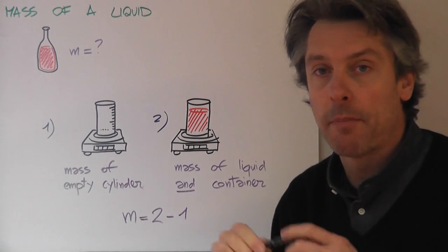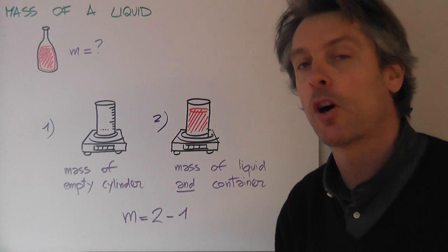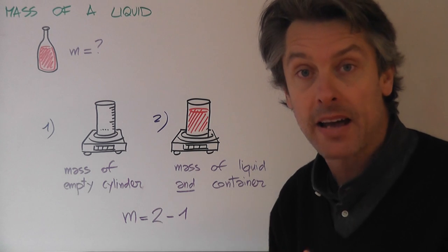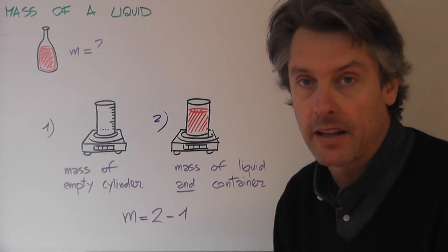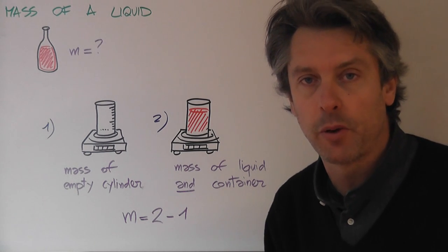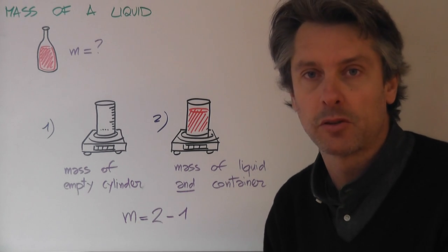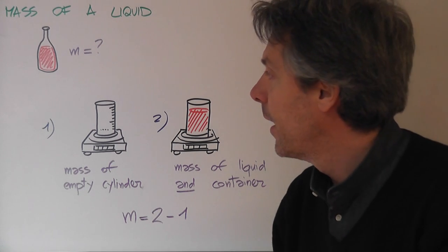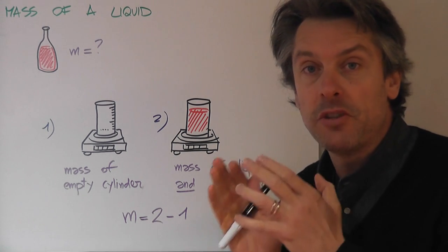Since we talked a lot about liquid, this is a word of caution, because it's very obvious how we can measure the mass of a solid, just place it on a balance. It's less obvious how we find the mass of a liquid. You can't pour the liquid on top of the balance, because it will just spill all over the place.